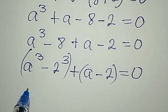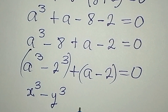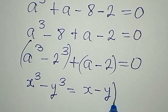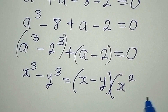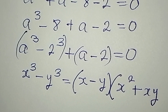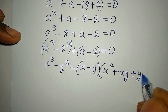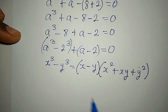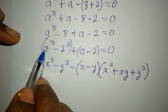To deal with this, recall that x to the power of 3 minus y to the power of 3 equals x minus y, times x squared plus xy plus y squared. If you expand this, that is what you get.